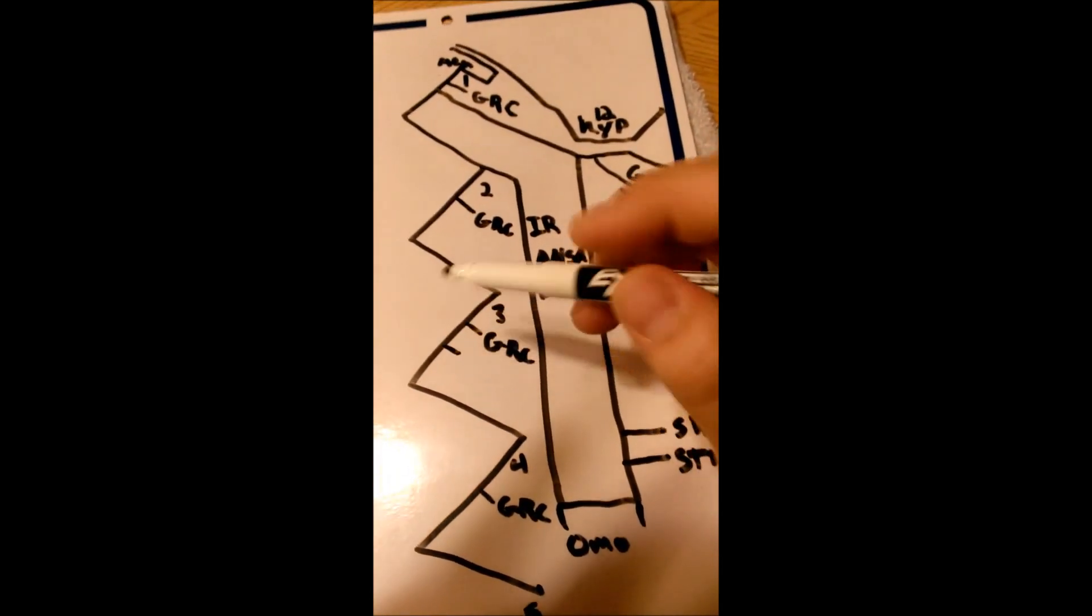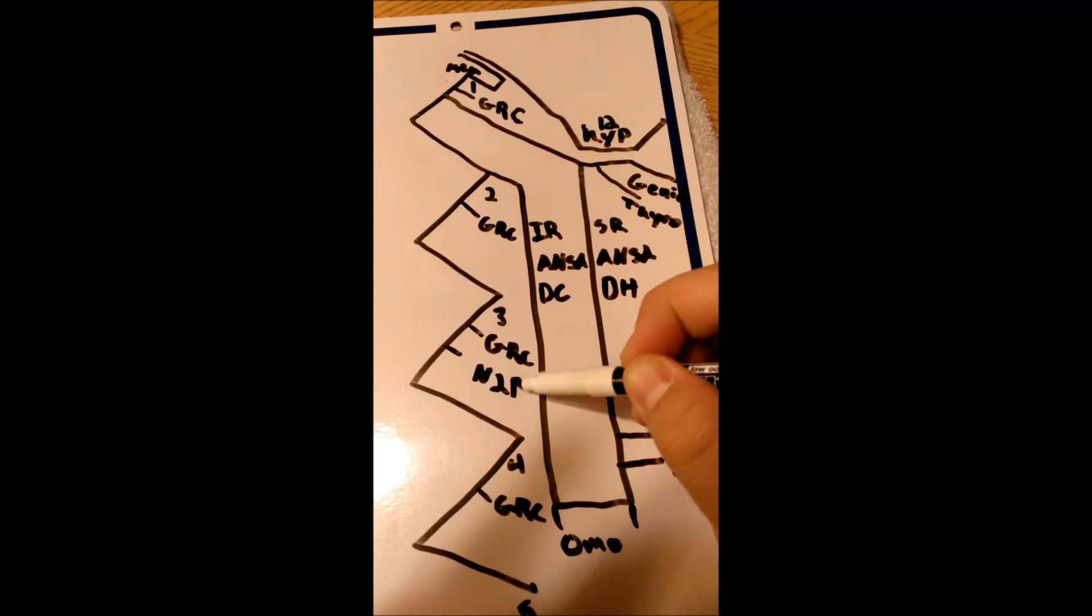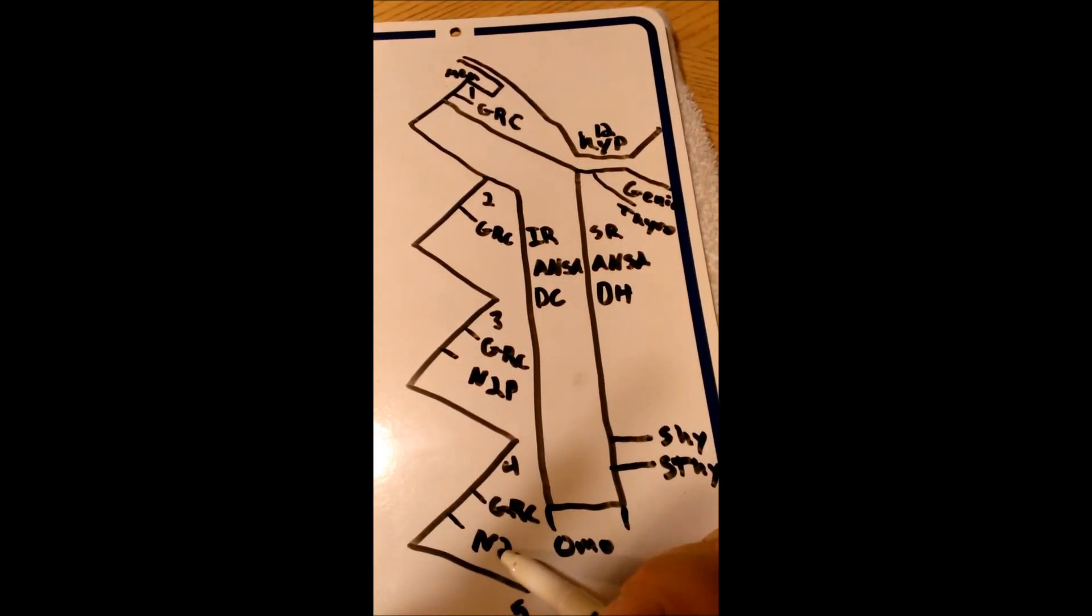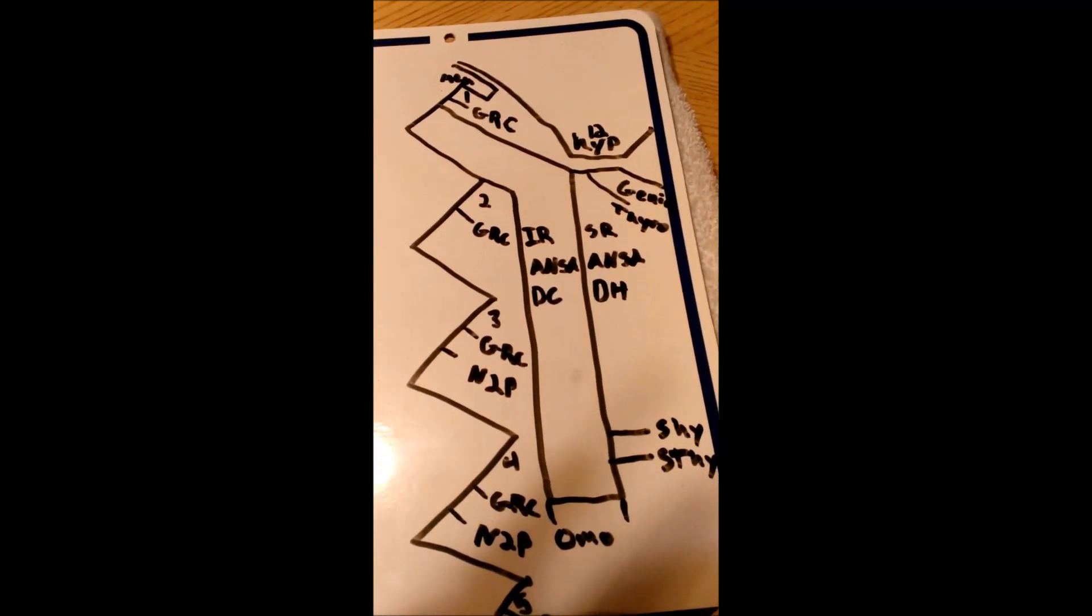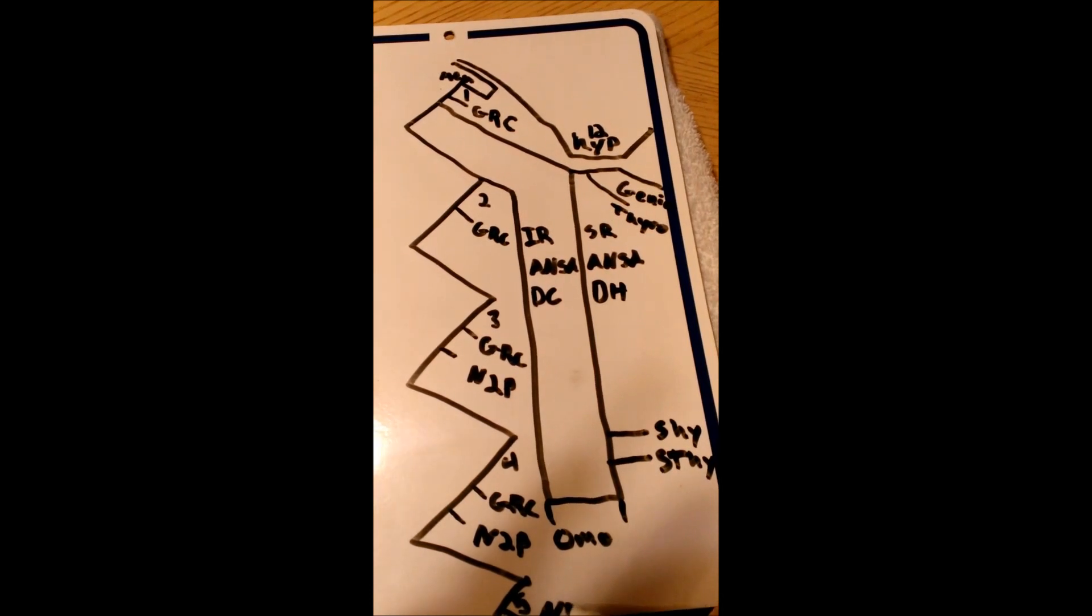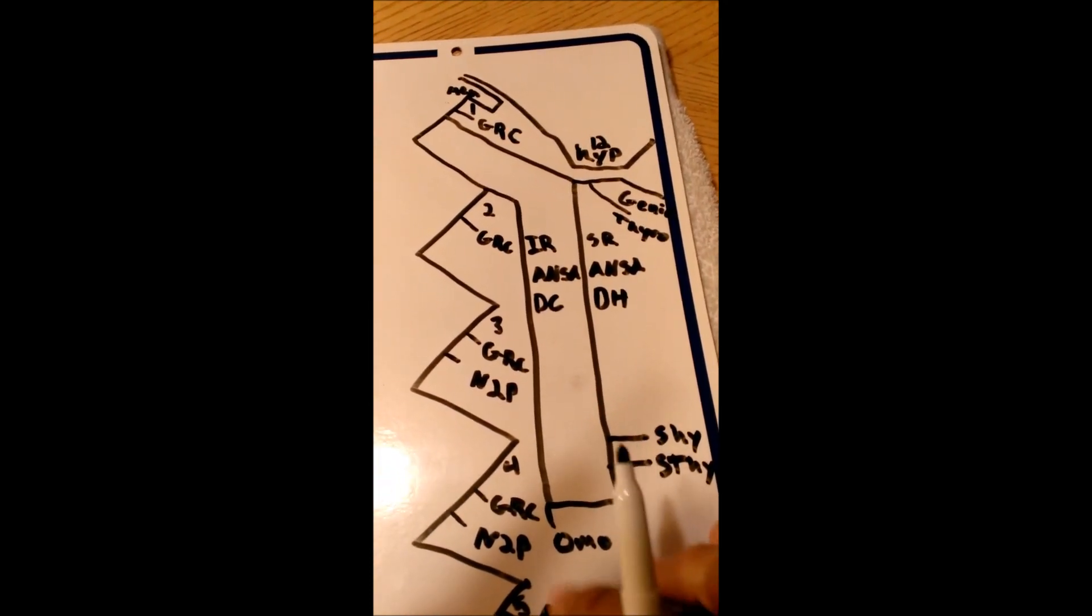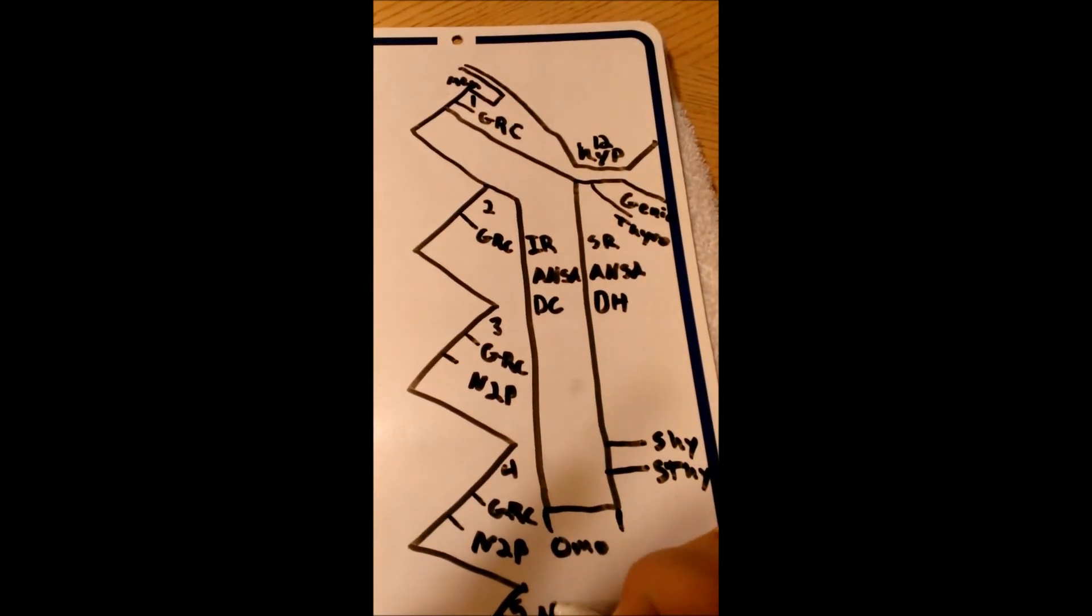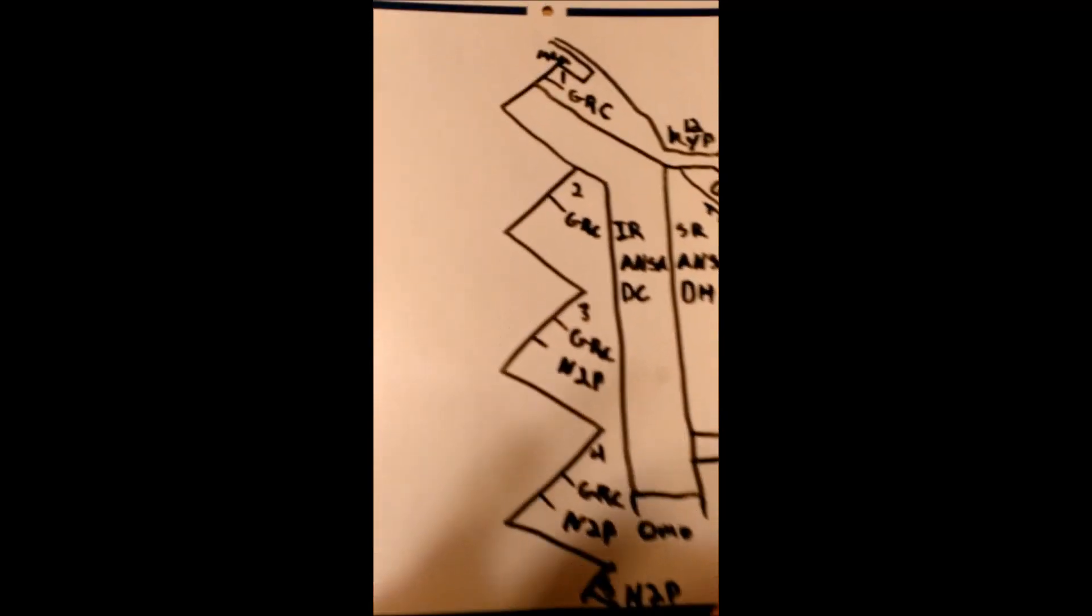So down here, these three branches will extend to become the phrenic. So I wrote down nerve to the phrenic. And there's a little one down here. I drew this a little bit low. But that would be the third branch and they would all come together to become the phrenic.